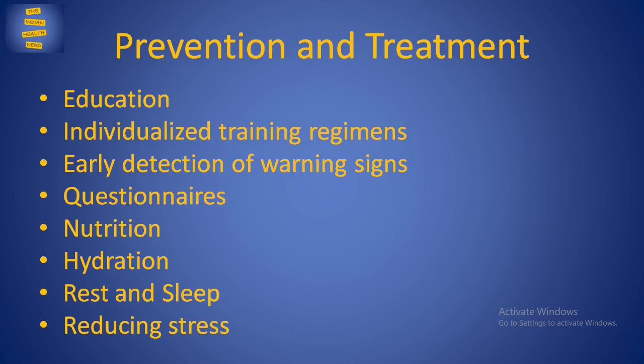Questionnaires: Various questionnaires have been developed for the early detection of overreaching and overtraining. Some prominent ones include the Recovery Stress Questionnaire for Athletes, the Profile of Mood States or POMS, and the Training Distress Scale. According to the POMS questionnaire, measures like fatigue, loss of vigour, and depression were most commonly associated with overtraining syndrome. Furthermore, a POMS energy index measure found that loss of vigour was more strongly associated with overtraining than fatigue.